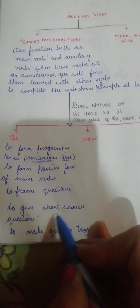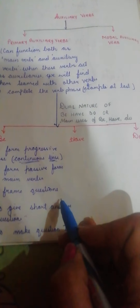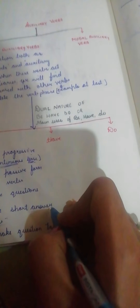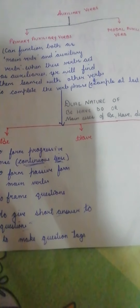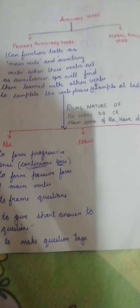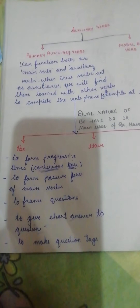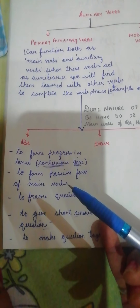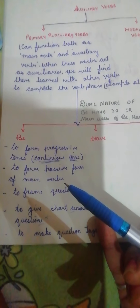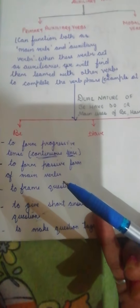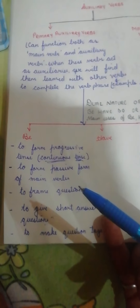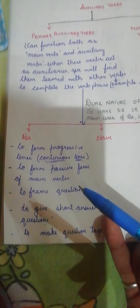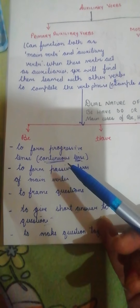BE is also used to give short answers to questions. For example, if somebody asks: 'Are you going to the movie?' — this question is formed using a BE family member. To answer, we give a short answer: if many members are going, we say 'Yes, we are,' or 'Yes, I am.' This is a short answer using a member of the BE family.